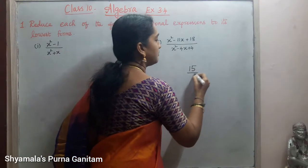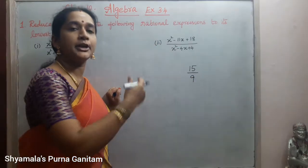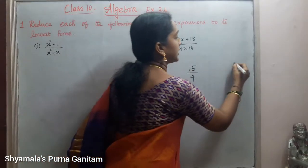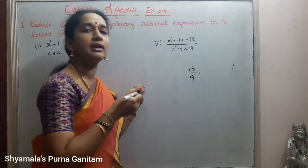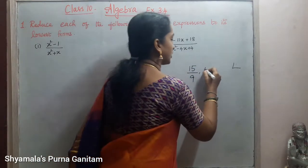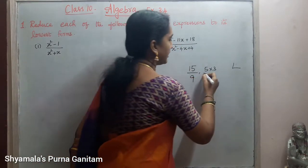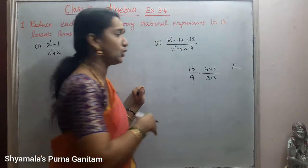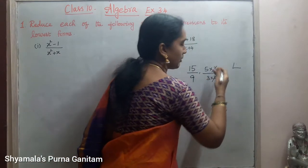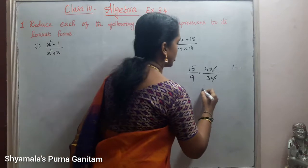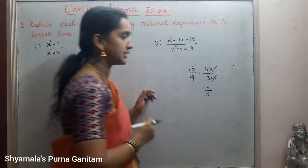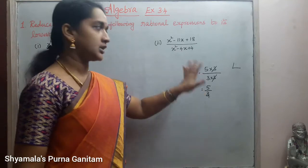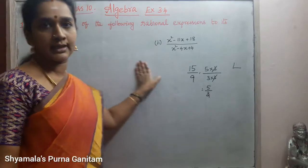For example, 15 by 9. If we are asked to reduce it to the lowest terms, we will find the factors. 5 and 3 are factors of 15 — five 3s are 15. And for 9, it is 3 into 3. We cancel whatever is common, so the lowest term for 15 by 9 is 5 by 3.